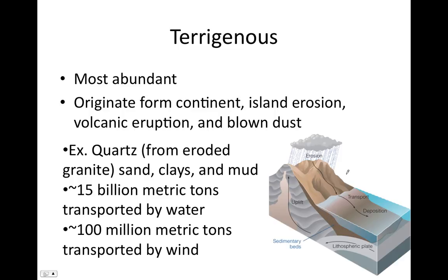Terrigenous sediment is the most abundant type of sediment found on the seafloor. It originates from the erosion of continents, island arcs, and volcanic islands — basically particles or pieces of rock such as boulders, cobbles, sand, and clay. There are around 15 billion metric tons of terrigenous sediment transported into the ocean by water, and around 10 million metric tons transported by wind.